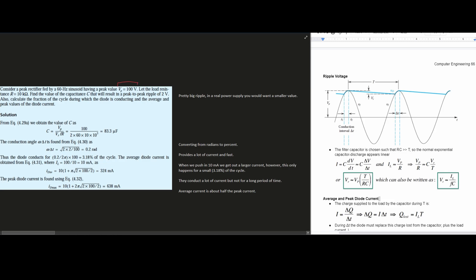We're going to let the load resistance be R equal to 10 kilo ohms. We need to find the value of the capacitance C, so we'll highlight this. And it's going to result in a peak-to-peak ripple of 2 volts. This is another important thing to note. Our ripple here is going to be 2 volts.